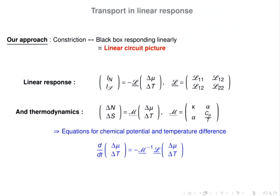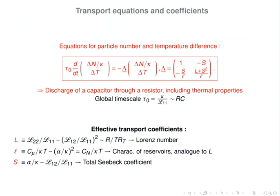This linear circuit approach is omnipresent in mesoscopic physics. Within the linear response framework, particle and entropy currents are related to chemical potential and temperature differences between the two reservoirs by the matrix L, which is symmetric by Onsager relations. Making the additional assumption that evolution within the reservoirs is quasi-static, thermodynamics tells us that particle number difference and entropy difference are also related to delta-mu and delta-T by another symmetric matrix M of thermodynamic coefficients.